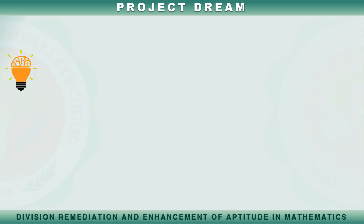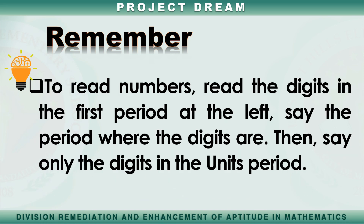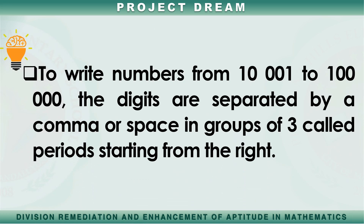To summarize our lesson, we should remember this. First, to read numbers, read the digits in the first period at the left, say the period where the digits are, then say only the digits in the units period. Second, to write numbers from 10,001 to 100,000, the digits are separated by a comma or space in groups of three called periods, starting from the right.